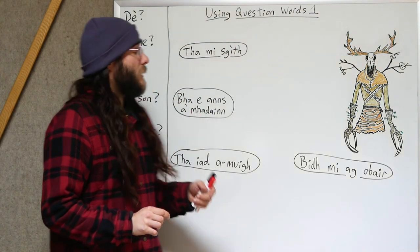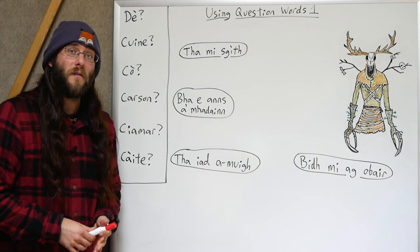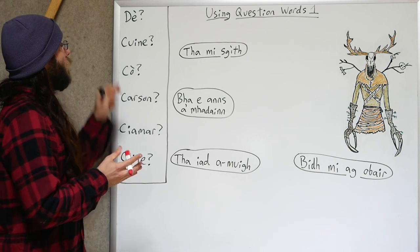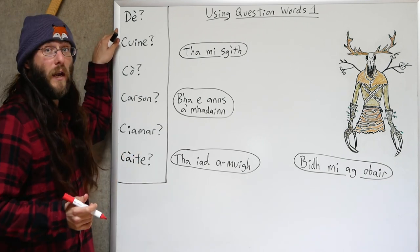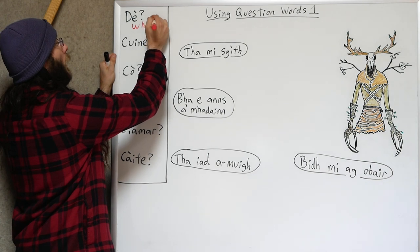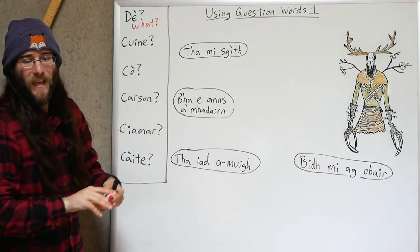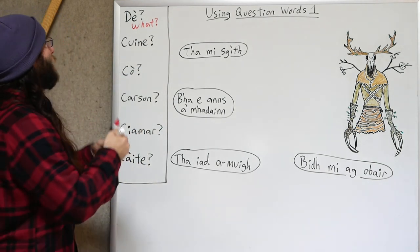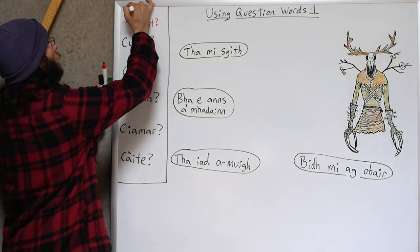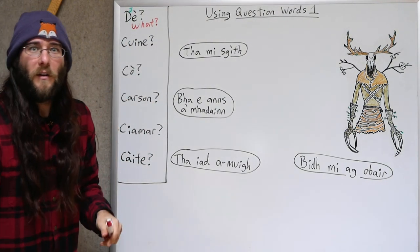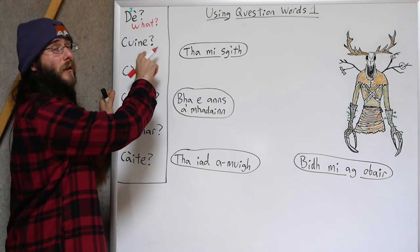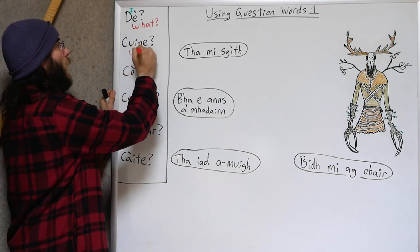Let's take a look at our question words and sort out what they mean. Let's start with J. J means 'what.' It's a J sound. And Kunya means 'when.'